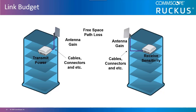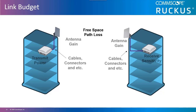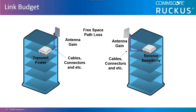To calculate your link budget you must account for the transmit power, cable and connector loss on both the transmit and receive sides of the communication, antenna gain for both the transmit and receive, path loss, and any other gains or losses in the system.